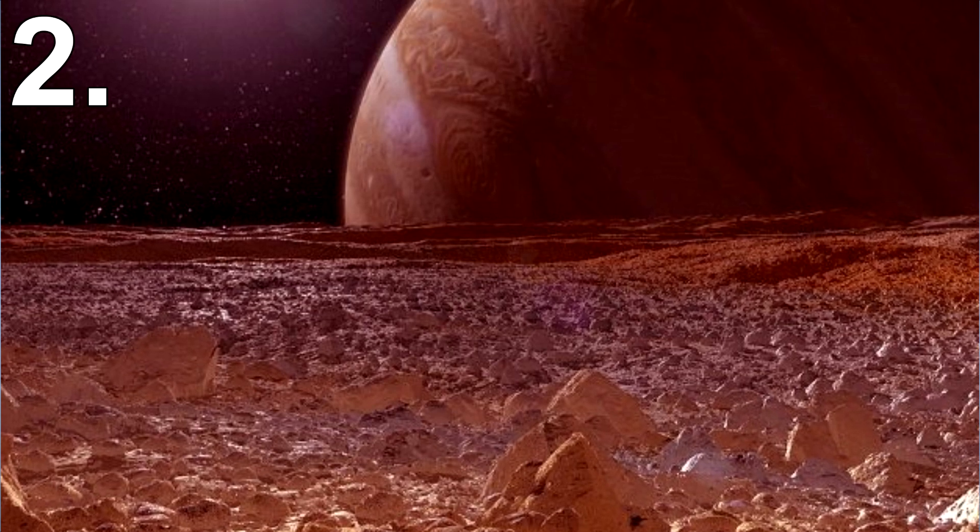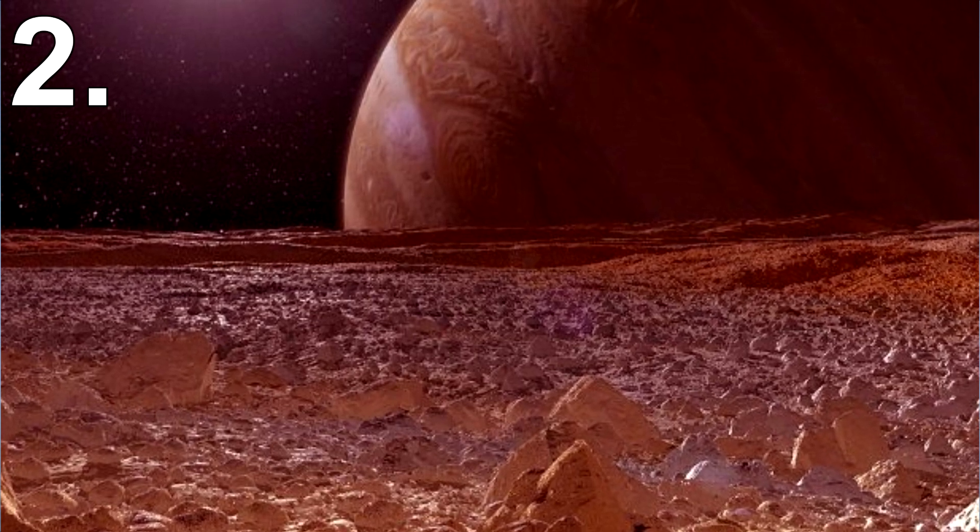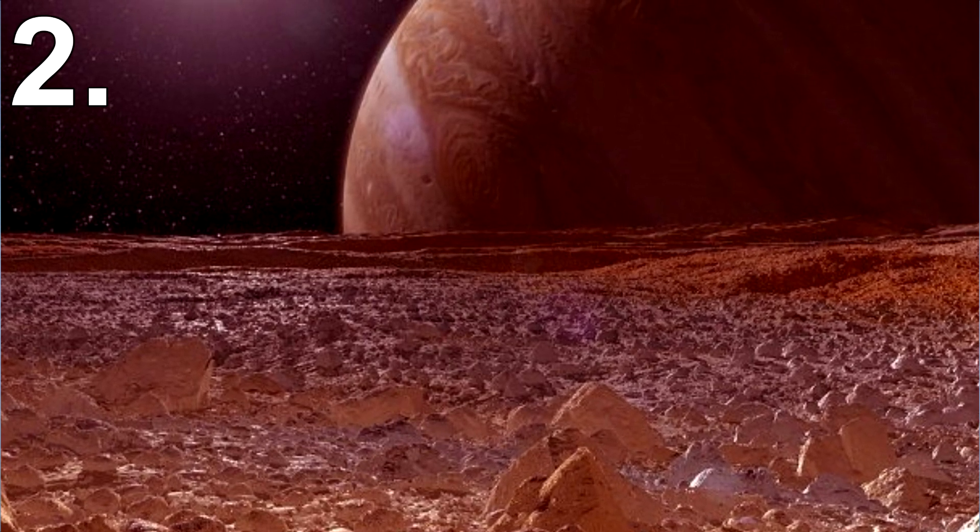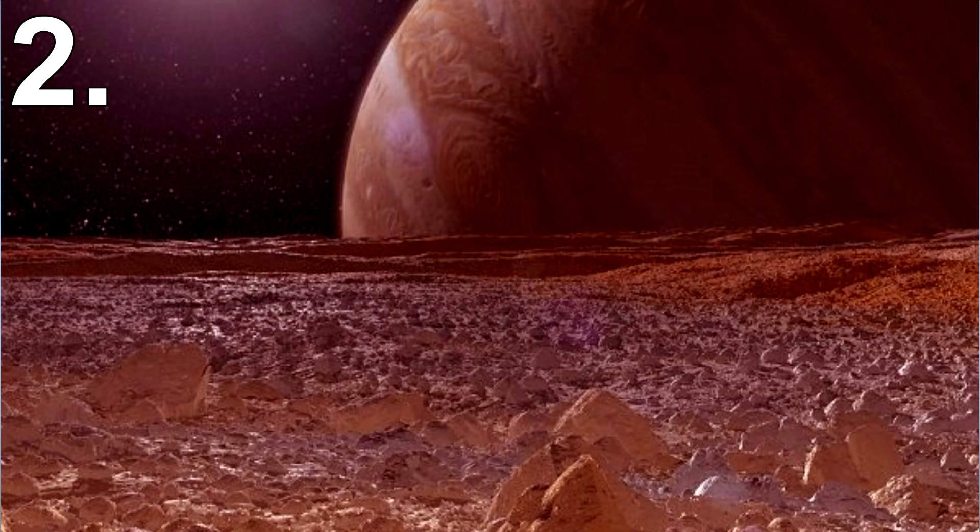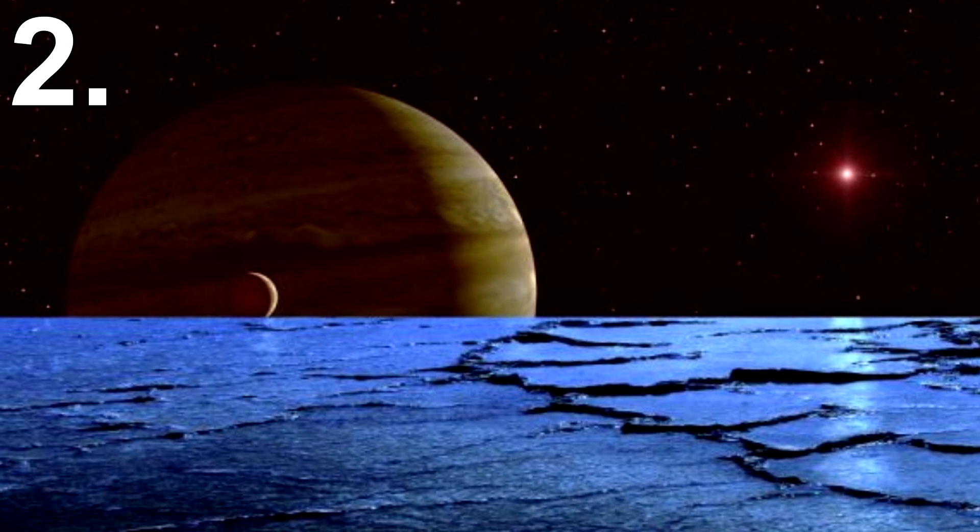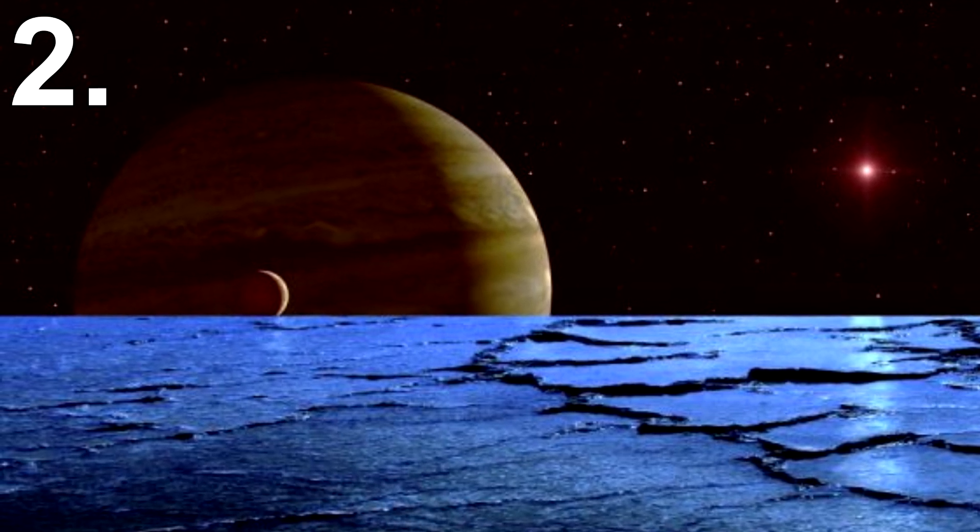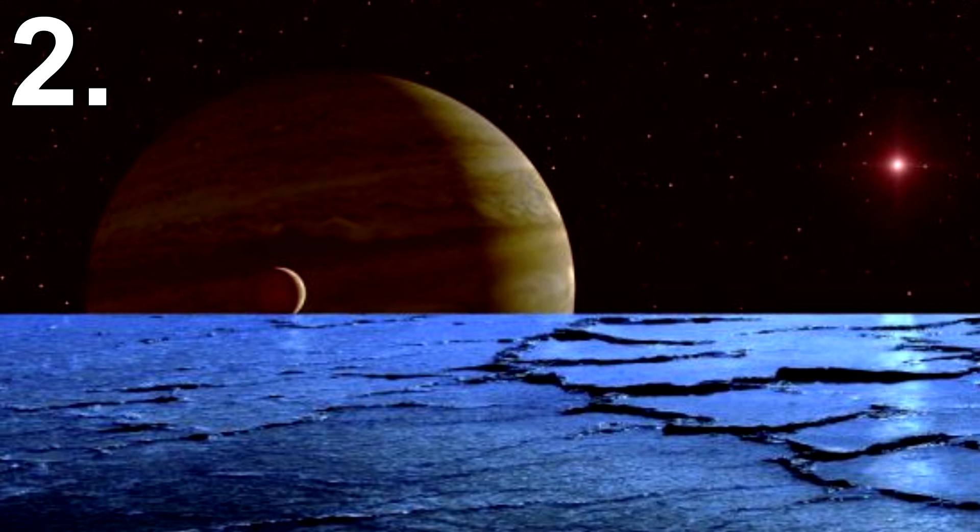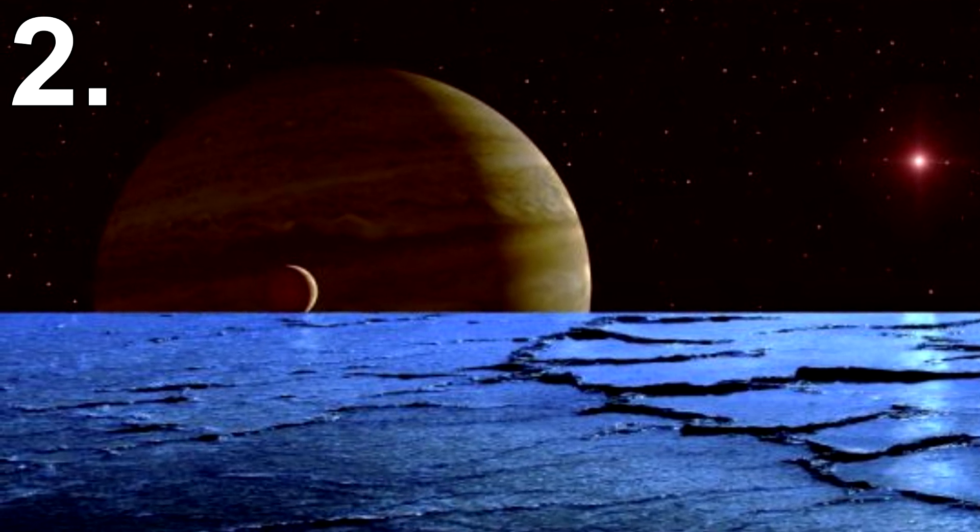You see Earth won't be able to support life but the moons of Jupiter and Saturn may have a chance. Europa is one of Jupiter's moons and we know it contains ice. As the sun increases in size it may be close enough to bring heat that could melt the ice and therefore create an environment suitable for sustaining life.